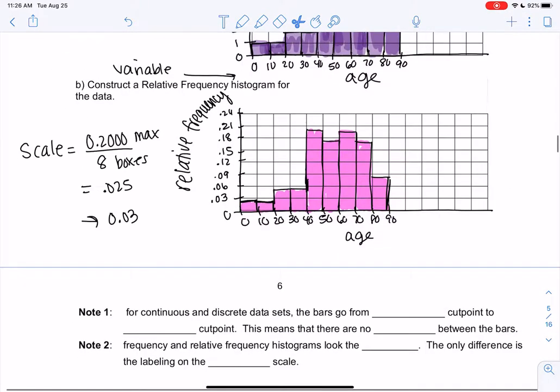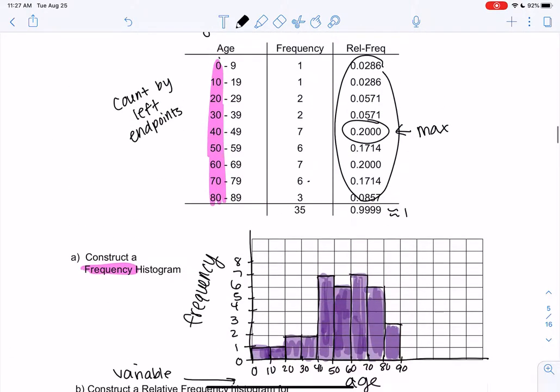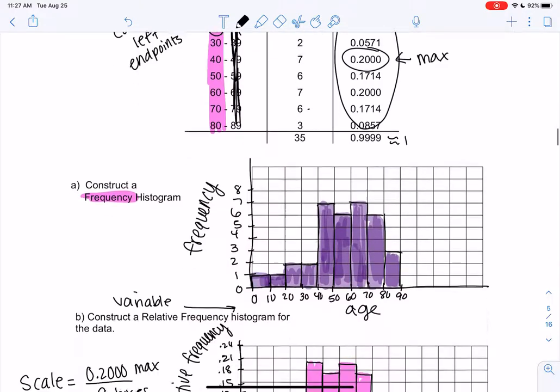So they look pretty much the same. So let's do a few notes and then we'll pause, stop the video. For continuous and discrete data sets, basically anytime we have either any type of numerical data, the bars go from lower to lower. So what the heck do I mean by that? We went from 0 to 10 and we basically kind of ignore this side, and that's okay. We went from 10 to 20. Basically we ignore the right endpoints. They're just kind of hidden in there and that's fine.